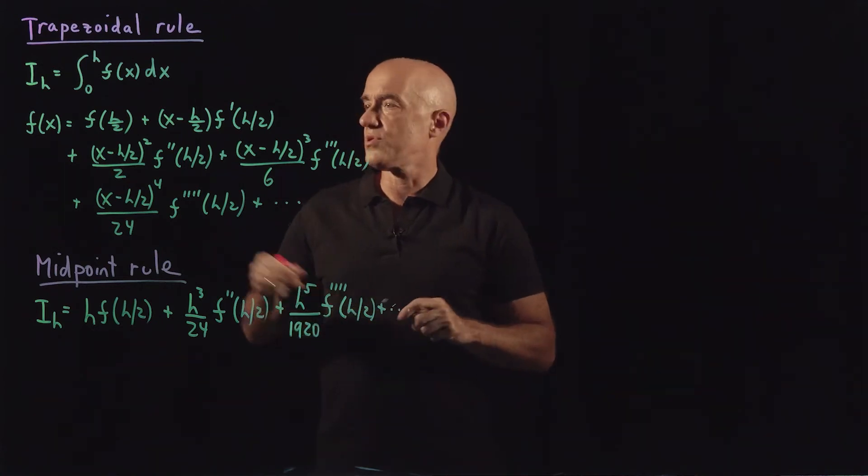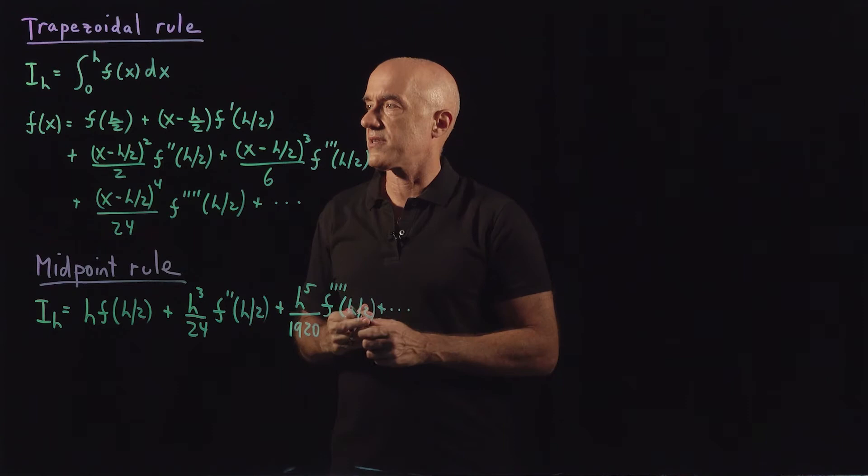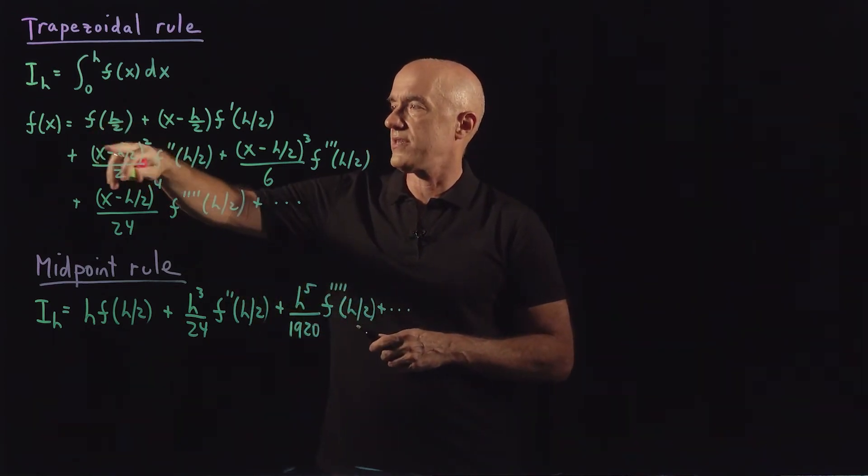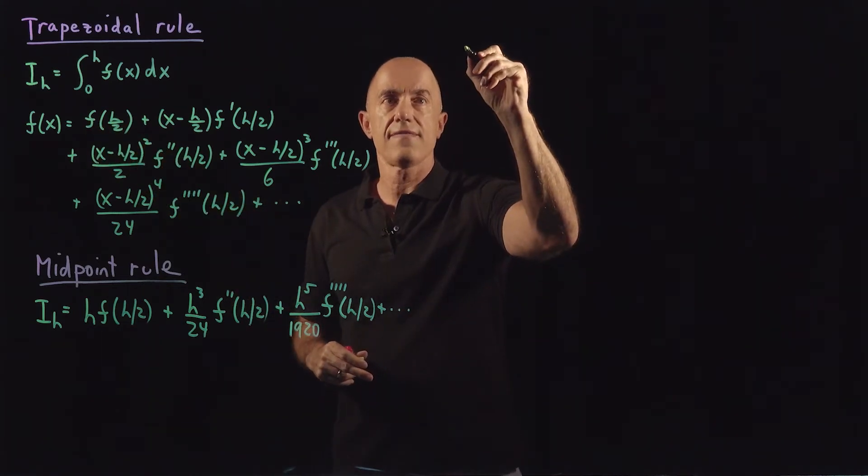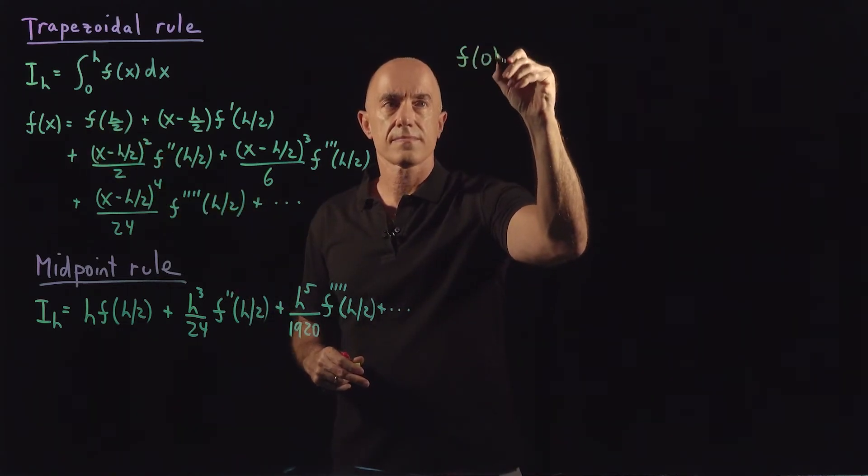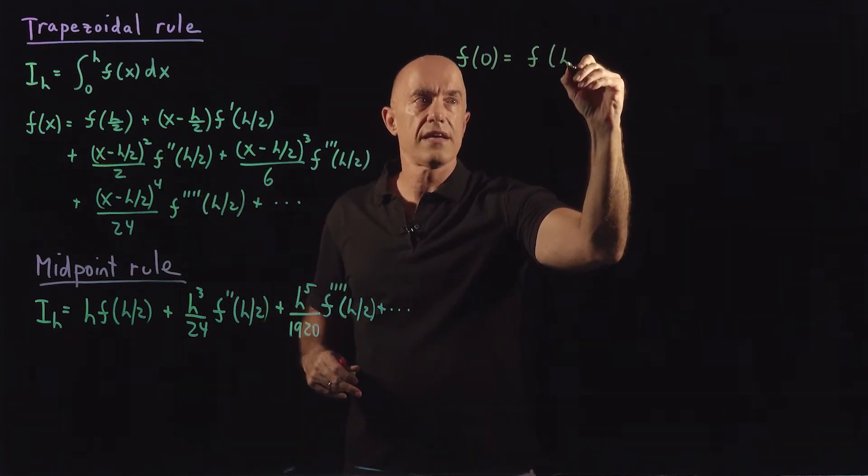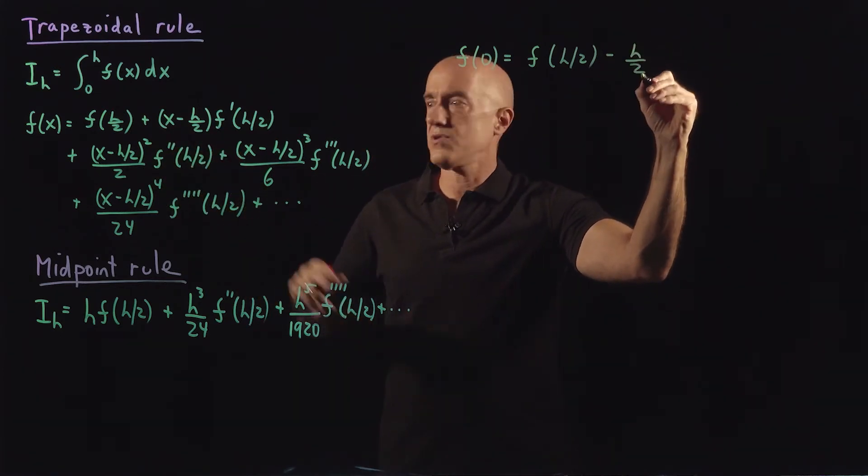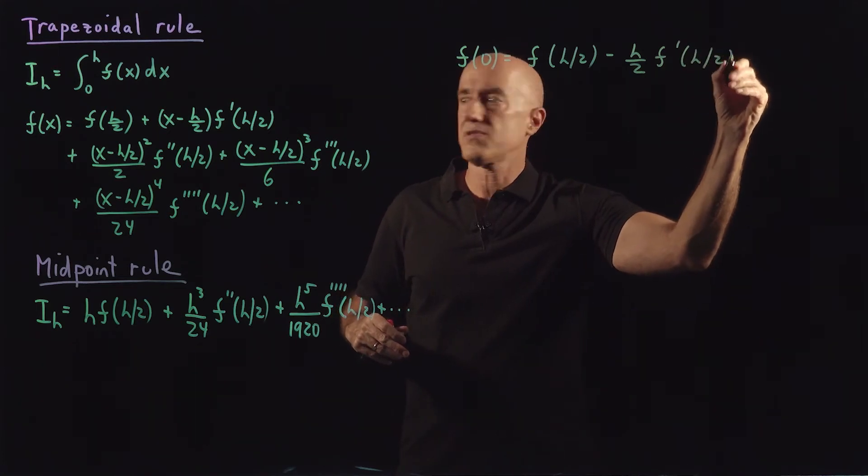For the trapezoidal rule now, let's take our f(x) Taylor series expansion and look at the value of this Taylor series at x equals 0. So we have f(0) is equal to f(h/2) minus (h/2) times f prime of h over 2,